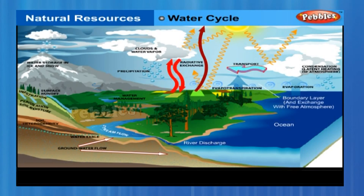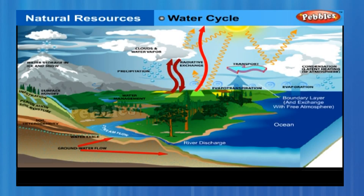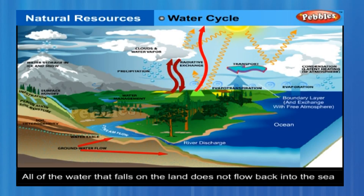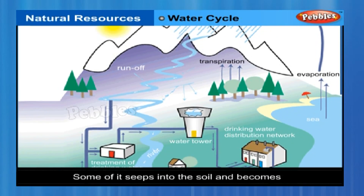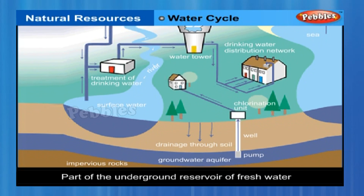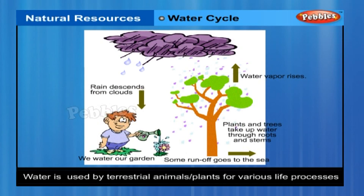Water cycle. The whole process in which water evaporates and falls on the land as rain and later flows back into the sea via rivers is known as the water cycle. All of the water that falls on the land does not immediately flow back into the sea. Some of it seeps into the soil and becomes part of the underground reservoir of fresh water. Some of this underground water finds its way to the surface through springs, or we bring it to the surface through wells or tube wells. Water is also used by terrestrial animals and plants for various life processes.